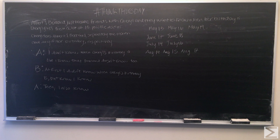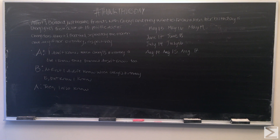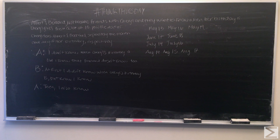Albert first says: 'I don't know when Cheryl's birthday is, but I know that Bernard doesn't know either.' Bernard then responds: 'At first I didn't know when Cheryl's birthday is, but I know now.' And then Albert says: 'Then I also know.'